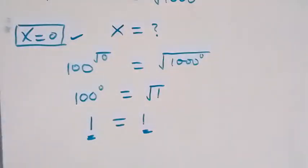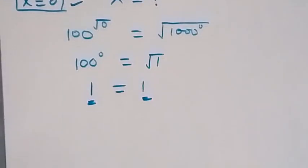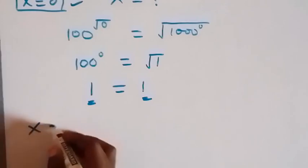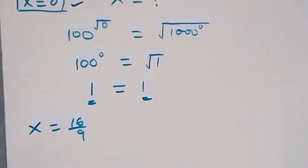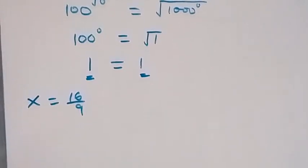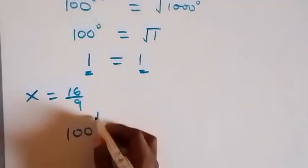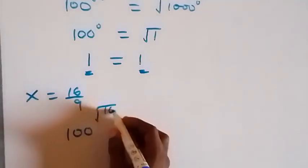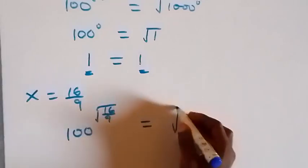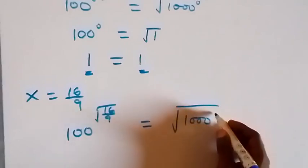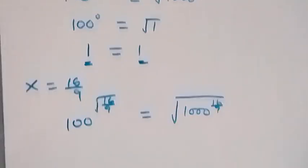Now for x equals 16 over 9, let's check. We have 100 raised to power root(16 over 9) equals root of 1000 raised to power 16 over 9. We can write the right side as 1000 raised to power 16 over 9, then raised to power half, because square root is the same as raised to power half.